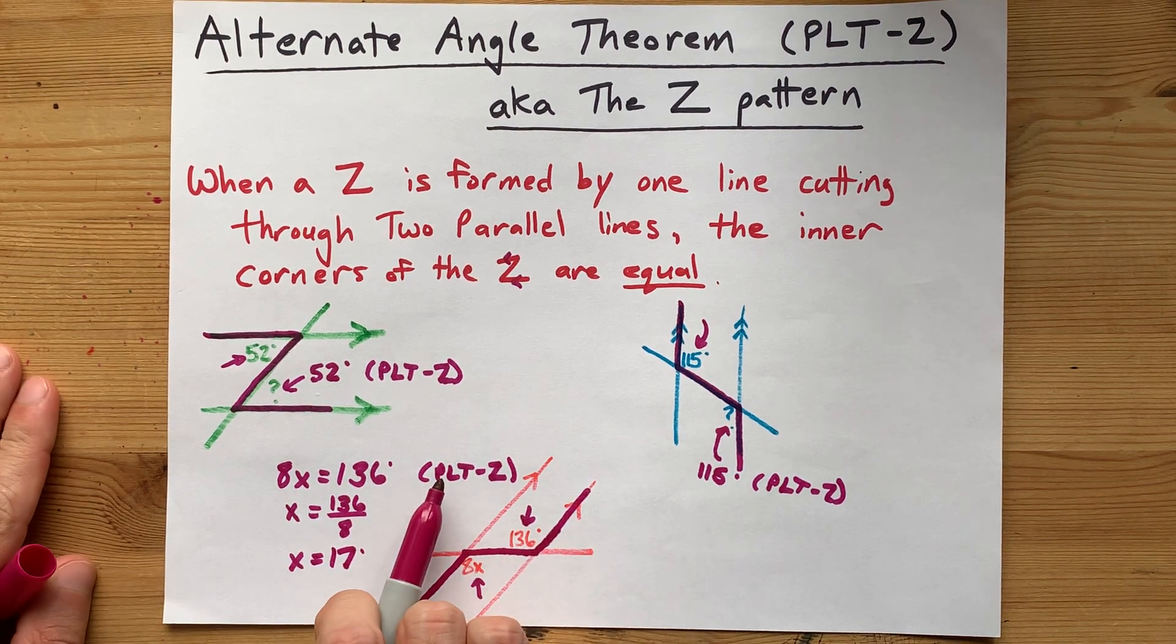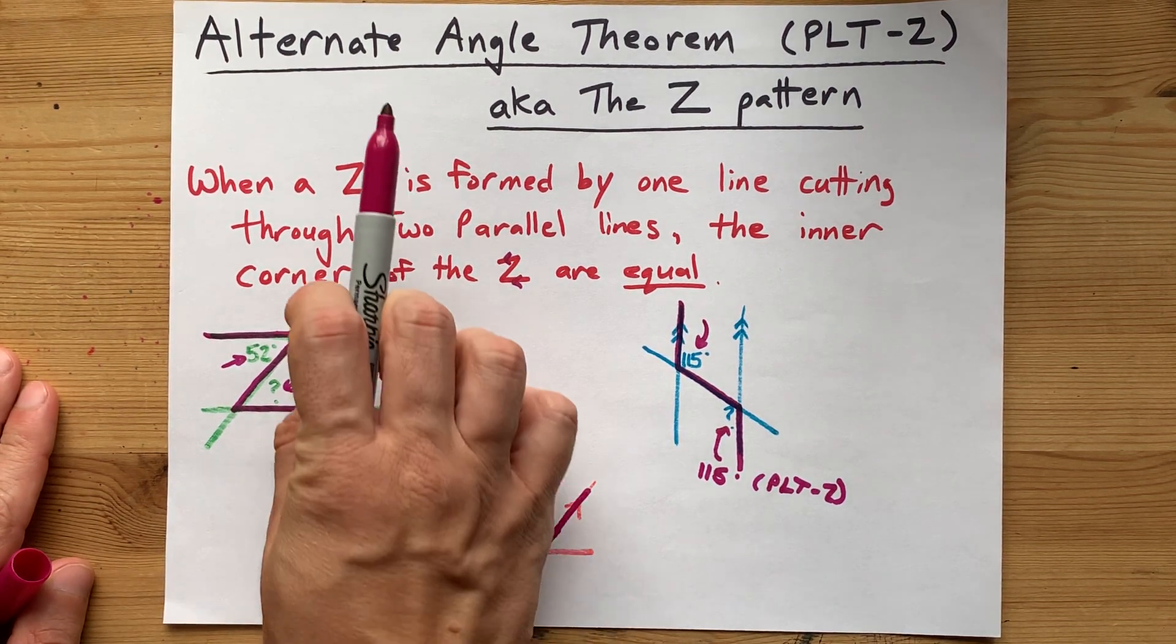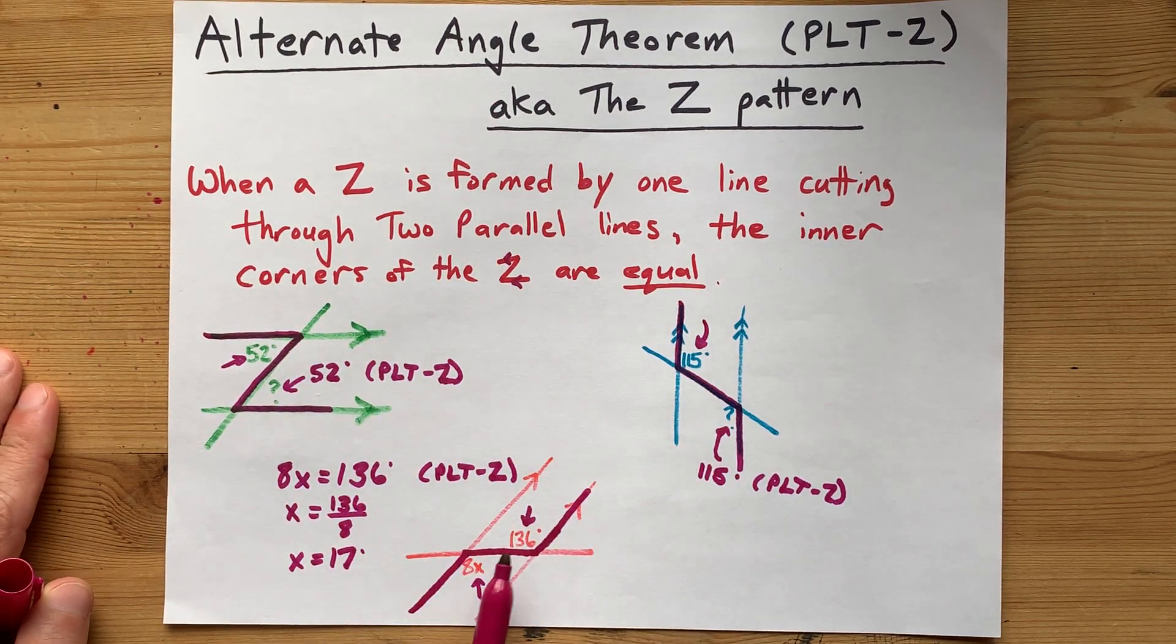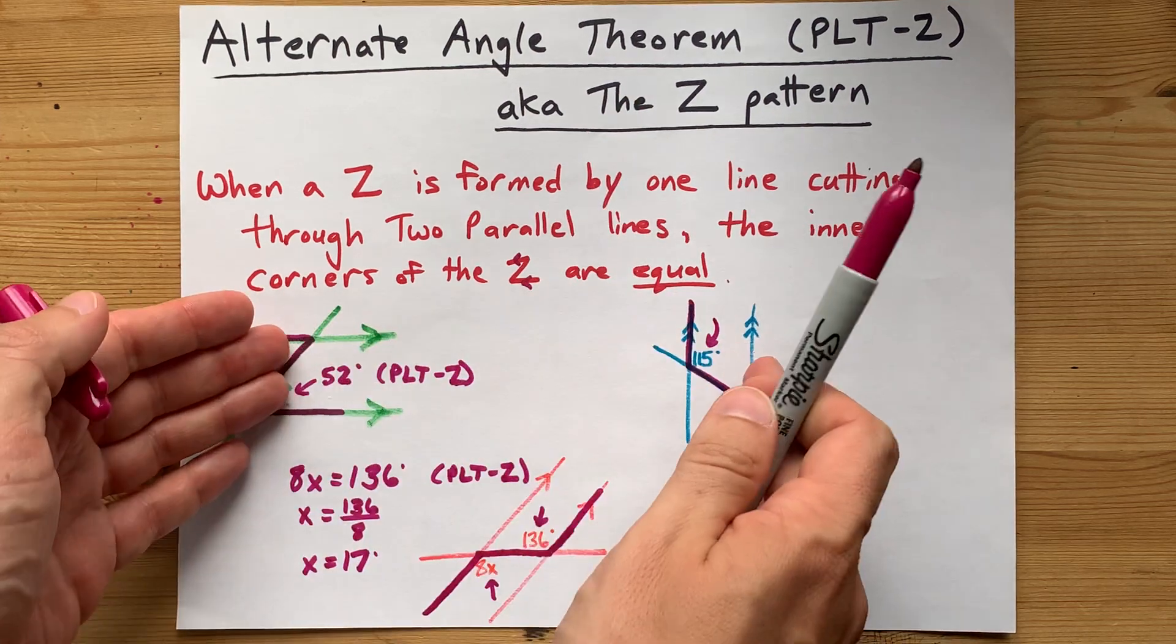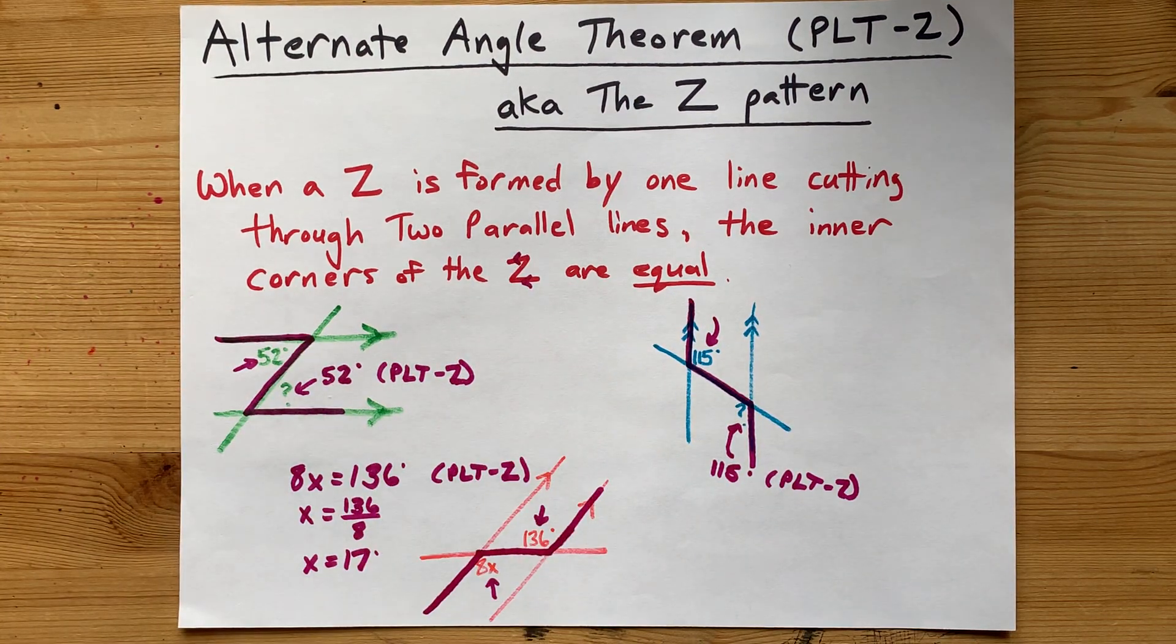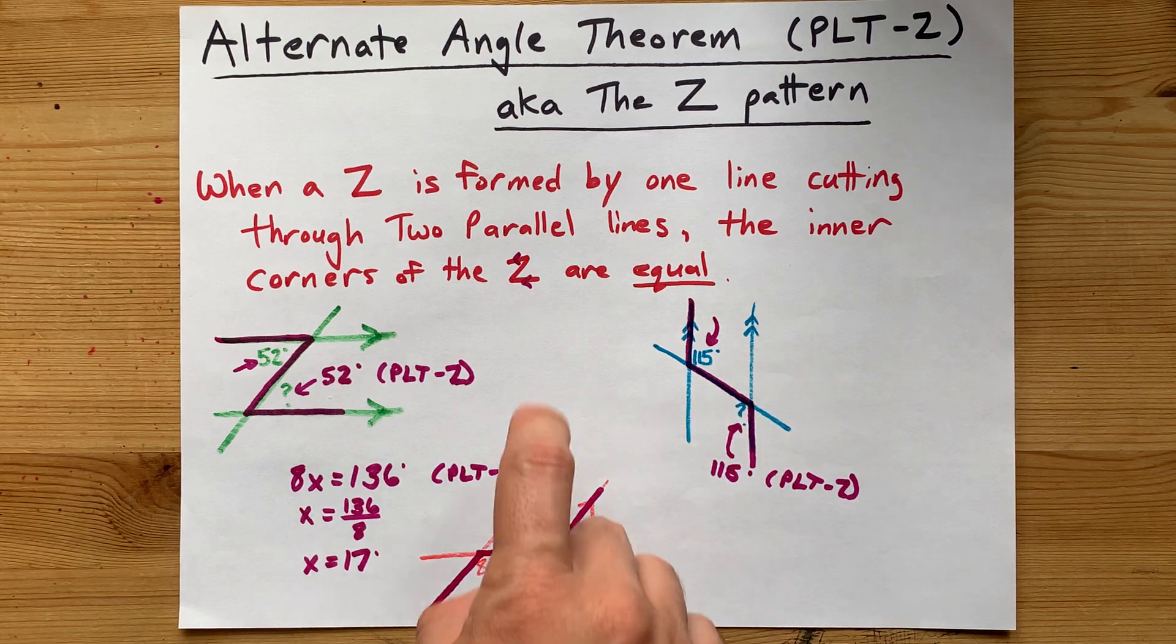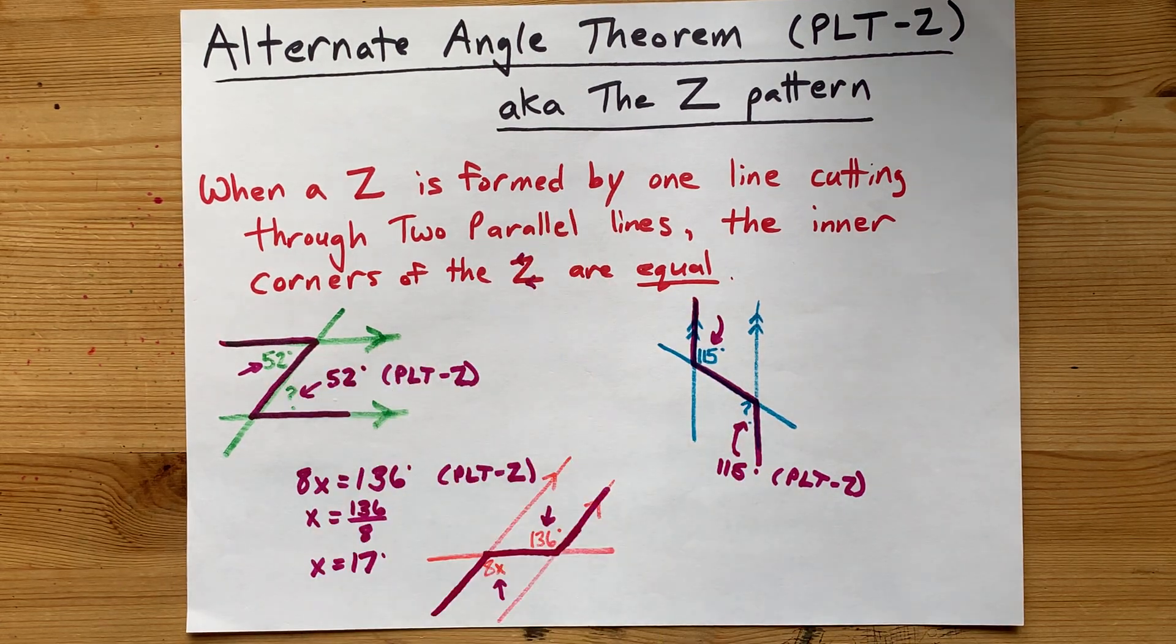But what matters here is that we used PLT-Z, or the Alternate Angle Theorem, to say that the inner corners were equal. Nice. Love it. This is one of my favorite angle theorems. And now you've learned something about me. Now go practice it. Best of luck.